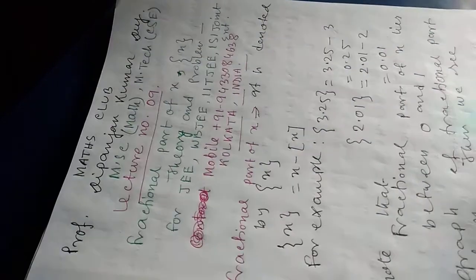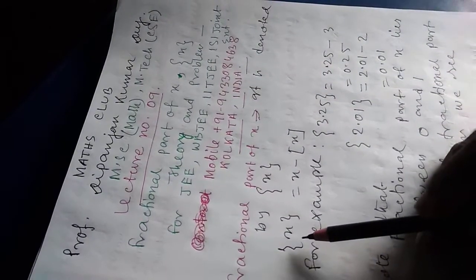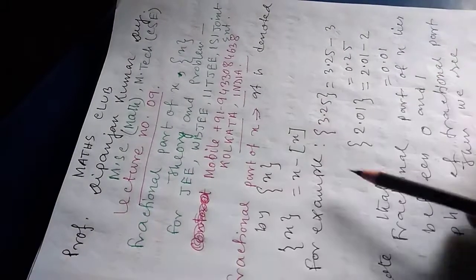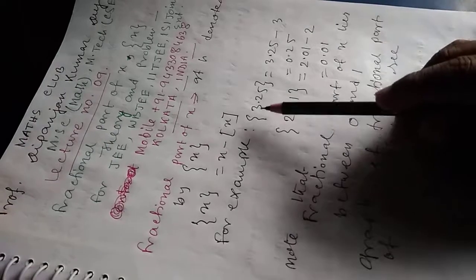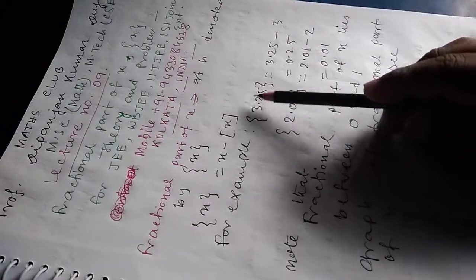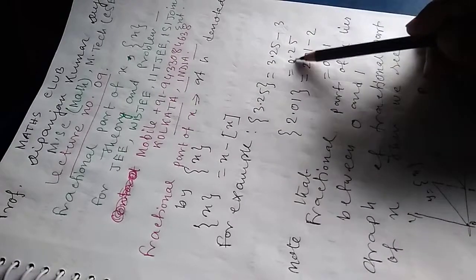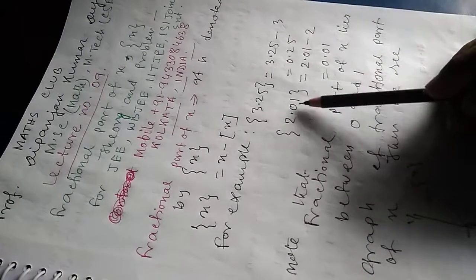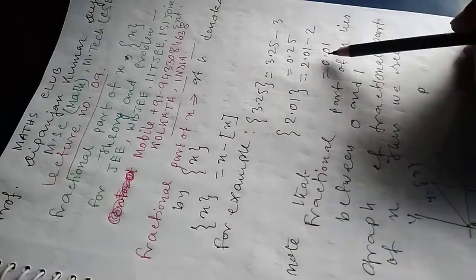So now, what is fractional part of X? Fractional part of X is denoted by {x}, and it is defined as: fractional part of X equals X minus integral part of X. For example, fractional part of 3.25 equals 3.25 minus 3, which is 0.25. And fractional part of 2.01 equals 2.01 minus 2, which is 0.01.